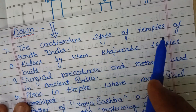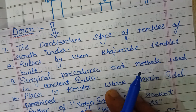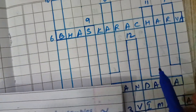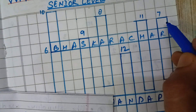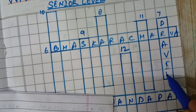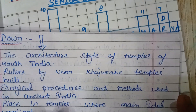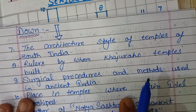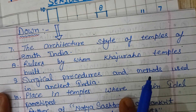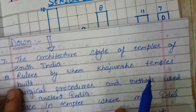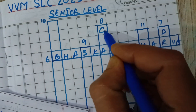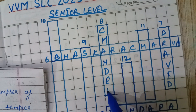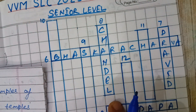Now the downward questions. Question number seven: The architecture style of temples of South India is Dravida — D-R-A-V-I-D — placed in the seventh column going downward. Question eight: The Khajuraho temples were built by the Chandela rulers — C-H-A-N-D-E-L — filled in eight downward.